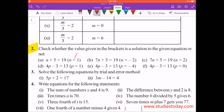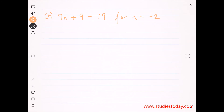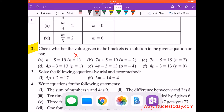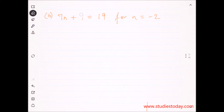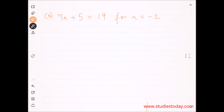Pehle wale ka answer galat hai — solution nahi hoga. Ab hum next start karte hain: 7n plus 5 equals to 19, for n equals to minus 2. So let's start the question. Isme hum pehle likhenge LHS — left hand side kaun si hai? Yeh poori left hand side hai: 7n plus 5. Ab n ko hatao aur n ki jagah minus 2 lagao.